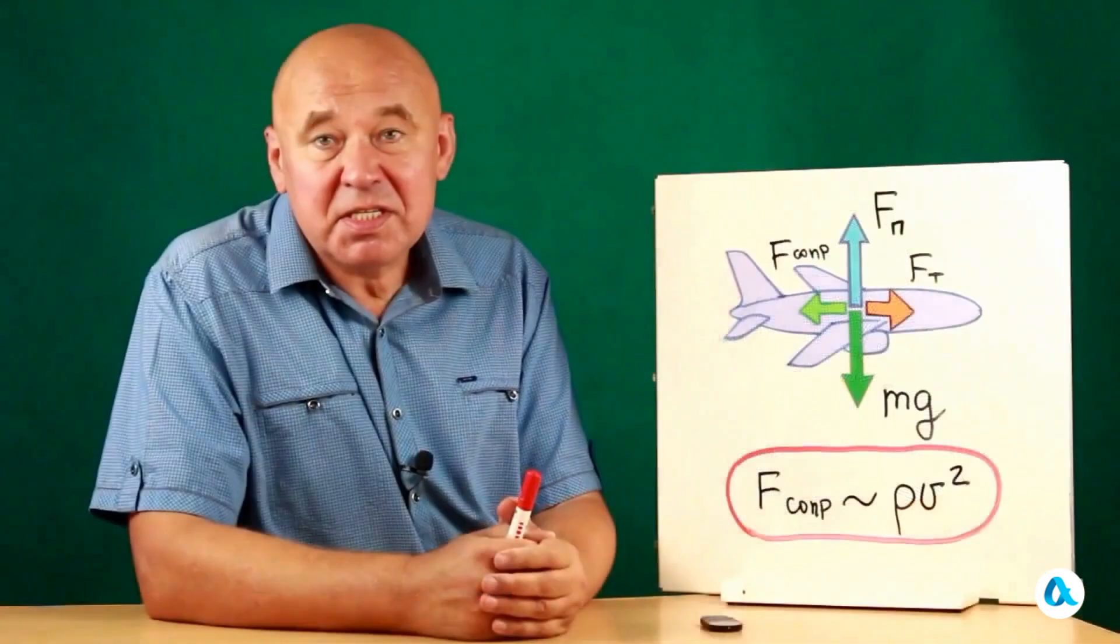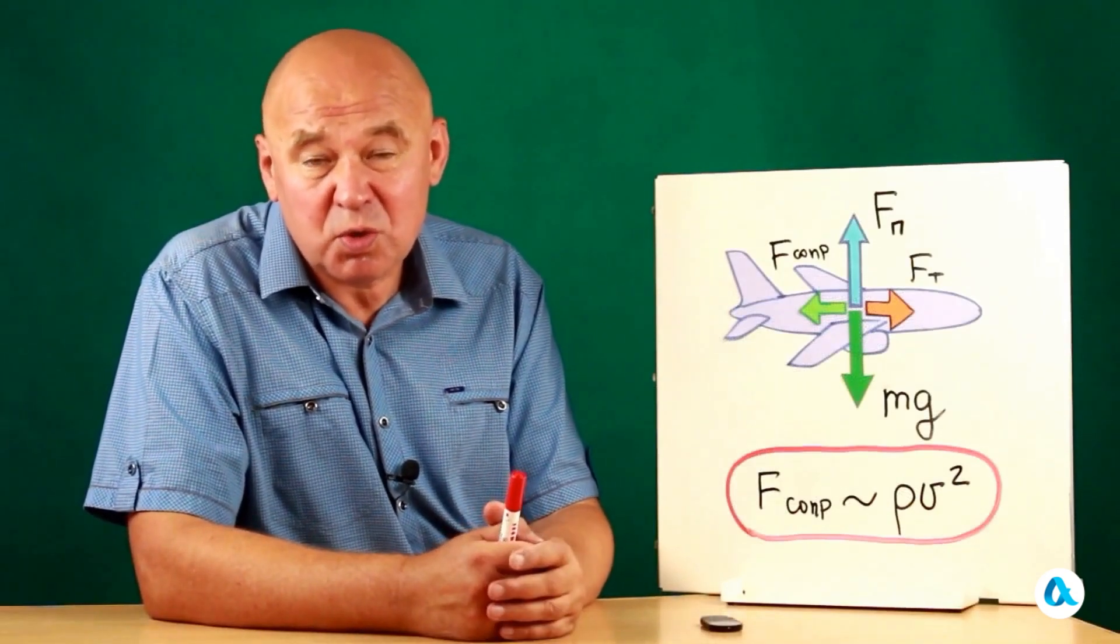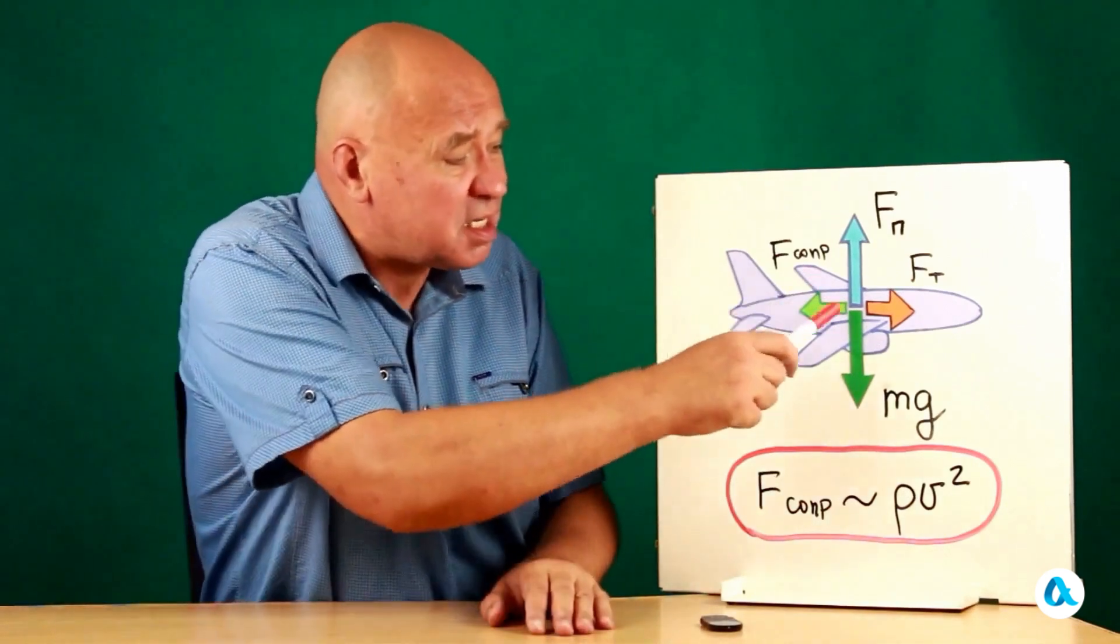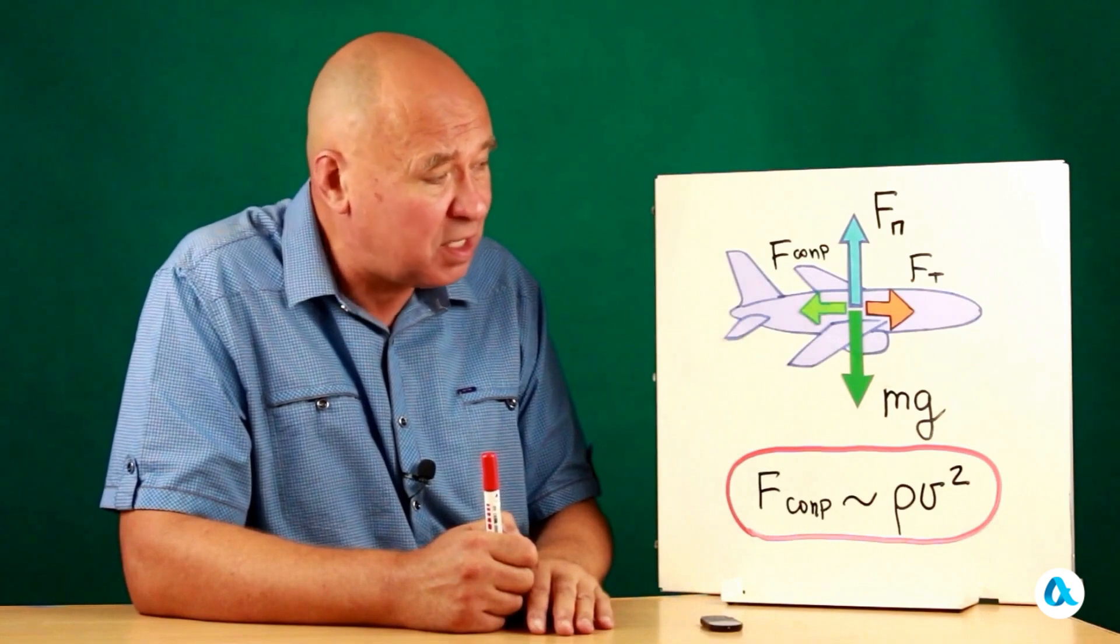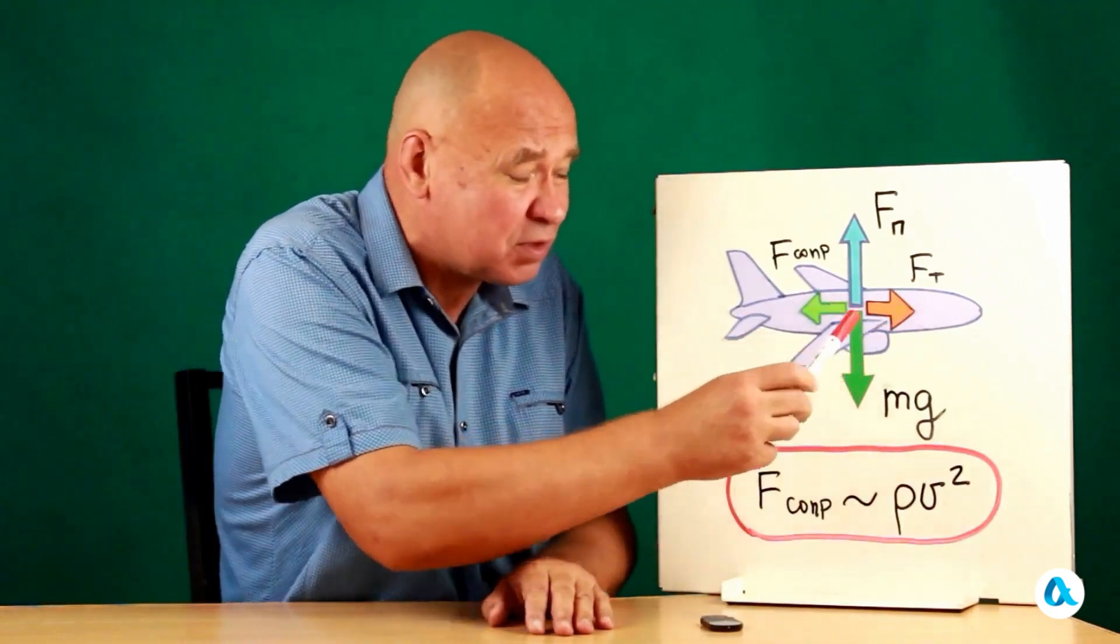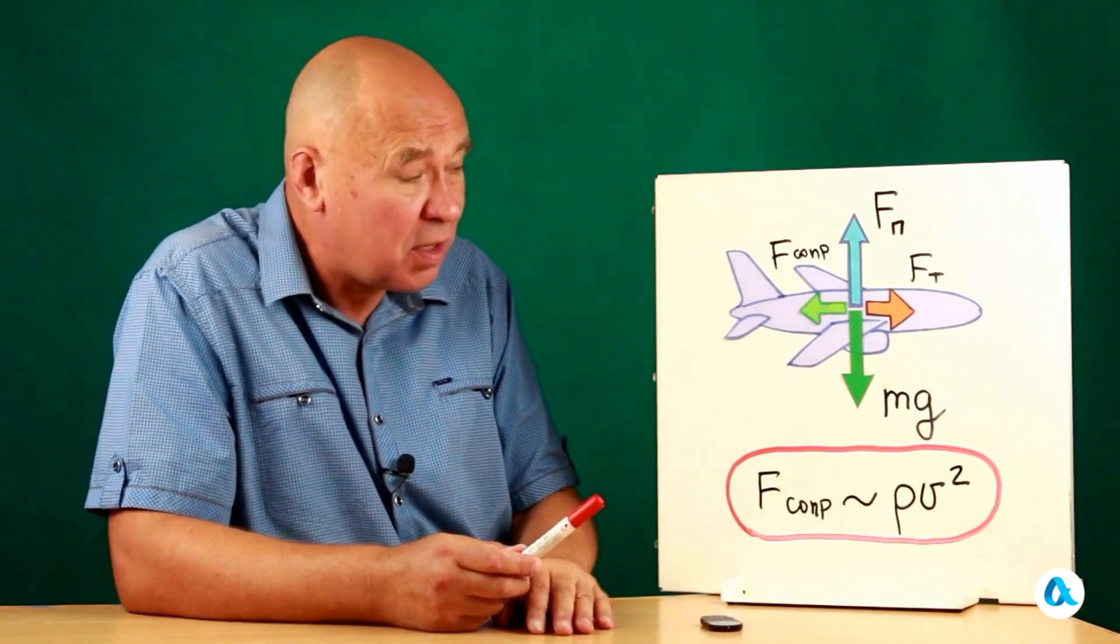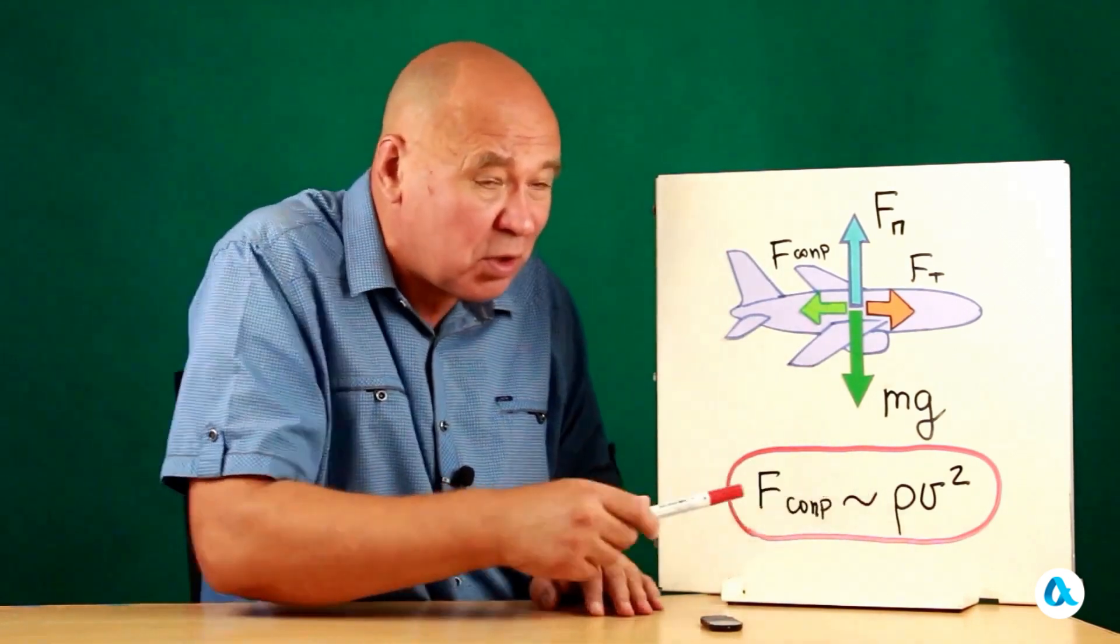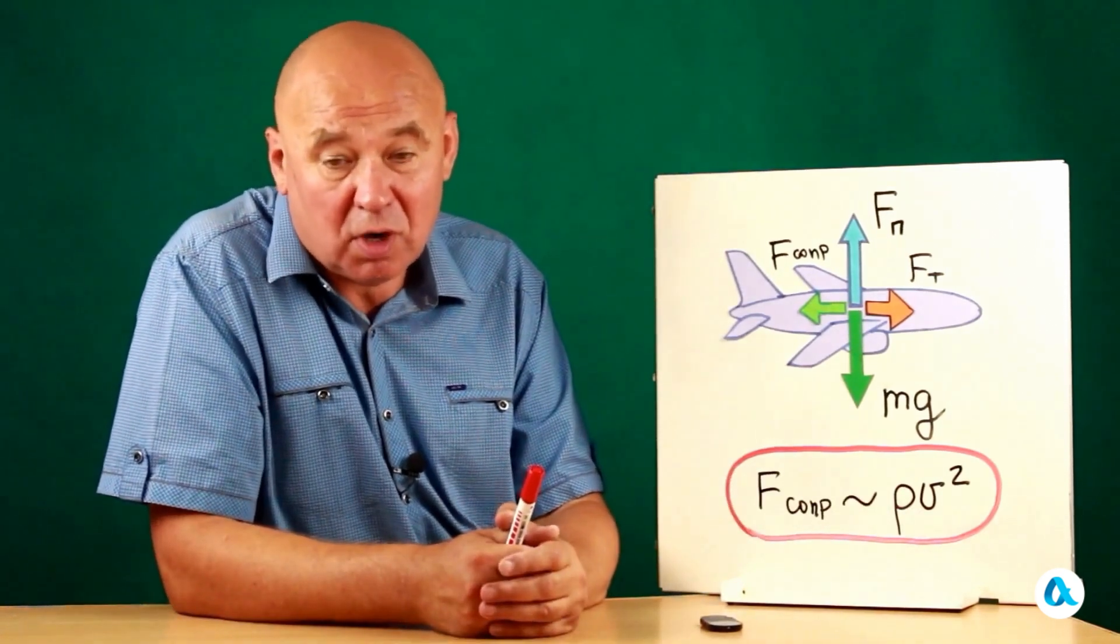And we will answer this question now. As physicists, we should start by illustrating all the forces acting on the airplane in horizontal flight. This gravitational force is balanced by the lift force created by the wings. And the thrust force generated by the engine balances the air resistance force. And regarding the air resistance force, we need to know that it is proportional to the air density and proportional to the square of the speed at which the airplane flies.